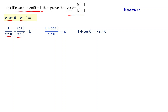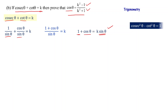We need cos theta in terms of k only. Here cos theta is present, but sin theta is an extra variable. Trigonometric ratios relations alone aren't enough, so the next option is trigonometric identities. The identity is cosec squared theta minus cot squared theta equals 1.